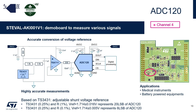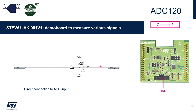Channel 4 is used to measure a precise voltage reference based on the TS3431, an adjustable shunt voltage reference. It has a precision of 0.25%, and using it with resistors of 0.1% precision, the output voltage will represent 6 LSB of ADC120. On channel 5, you have a direct connection to the ADC input — the simplest way to measure an external signal with this EVAL board. Connect your signal on this connector and make sure the signal level is below 3.3V.